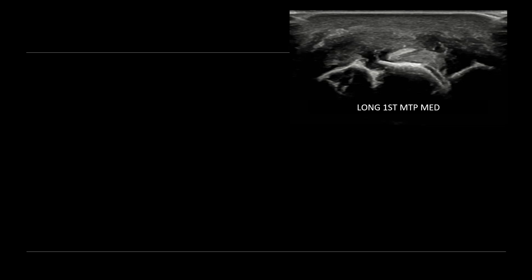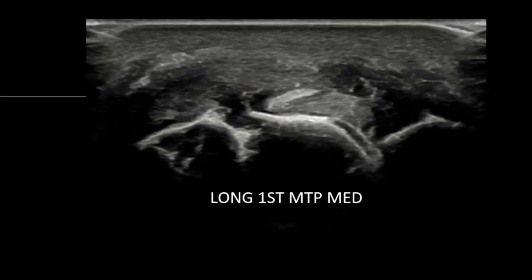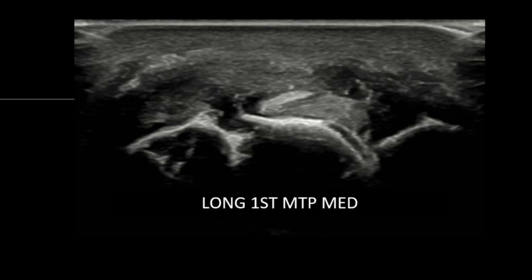There's one last ultrasound finding helpful in the diagnosis of gout. Returning to the initial case of the great toe first metatarsophalangeal joint with the punched out periarticular erosion with overhanging edges and overlying synovial hypertrophy — notice the normal echogenic bony cortex of the metatarsal head, then the anechoic hyaline cartilage overlying it. What's not normal is a second echogenic line on the surface of the cartilage, known as the double contour sign.